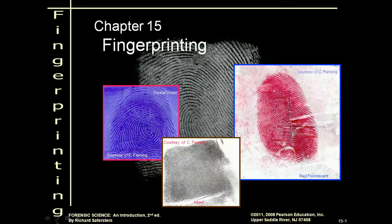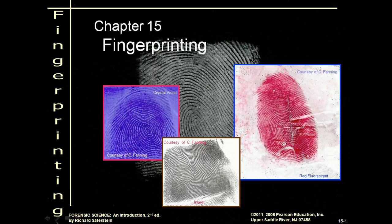This is going to be our lecture on fingerprints. We're going to do a quick overview of the main parts of the history of fingerprinting and using fingerprints for identification, and then we're going to jump into the types of fingerprints. You need to know the three different types of fingerprint classifications, specifically the whorl, loop, and arch. There are also some subcategories you'll need to know.